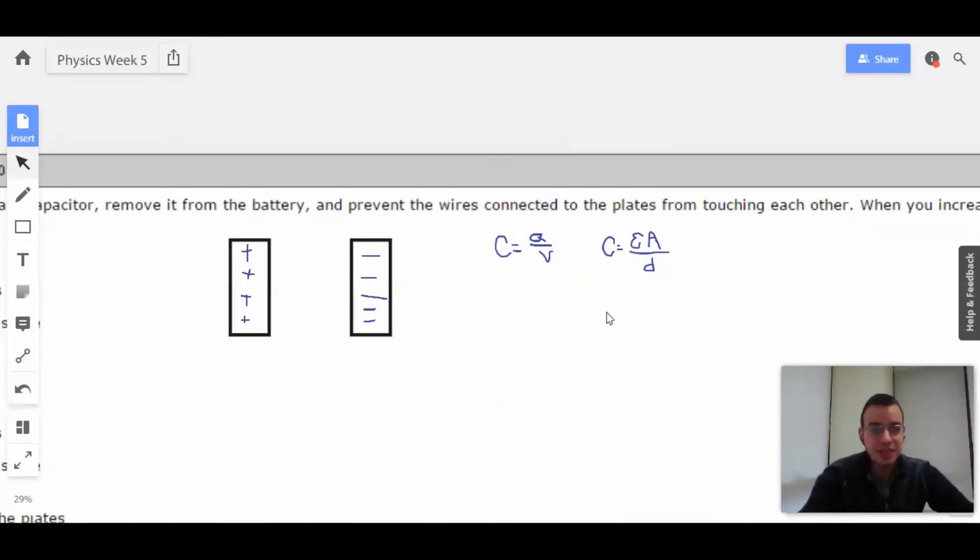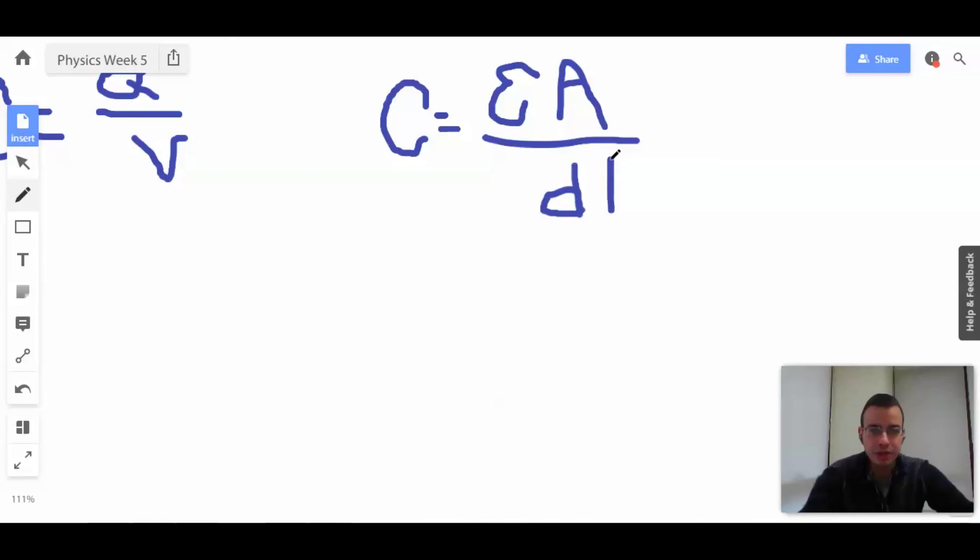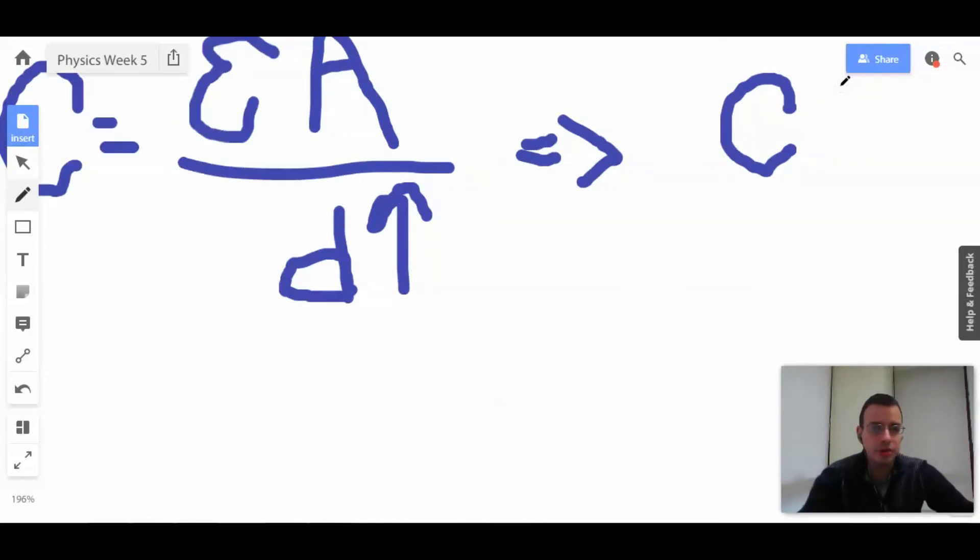So, they say that the distance increased between the two, so I'm going to do some arrow analysis. This goes up. Therefore, capacitance lowers.